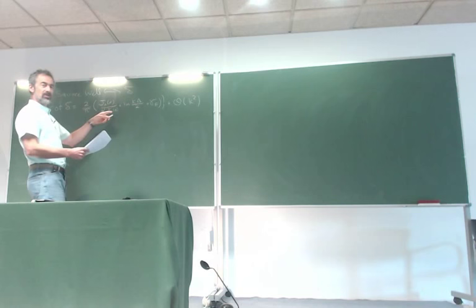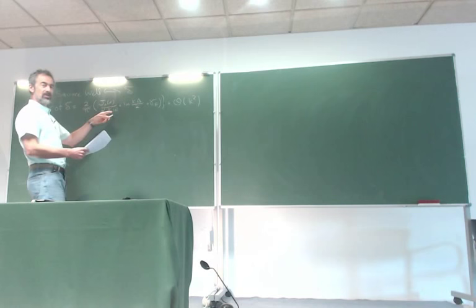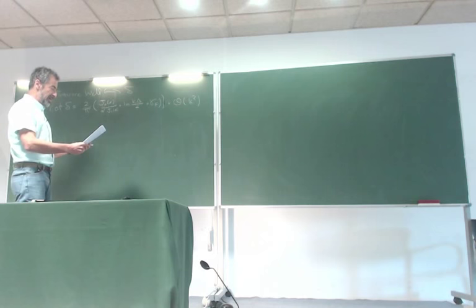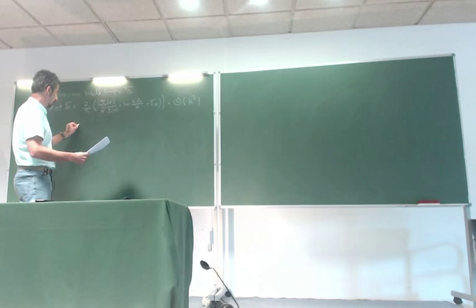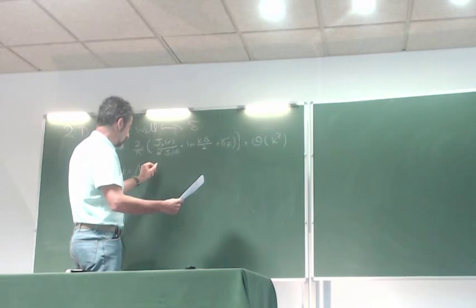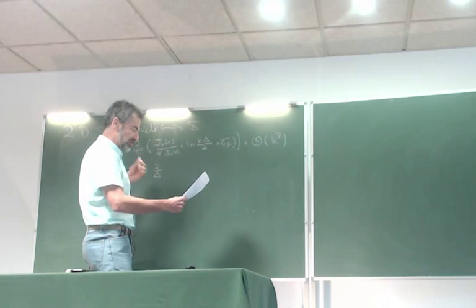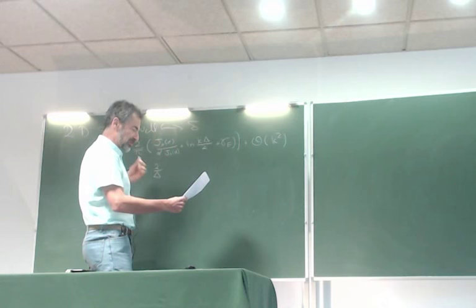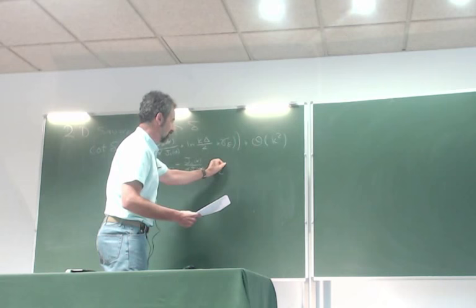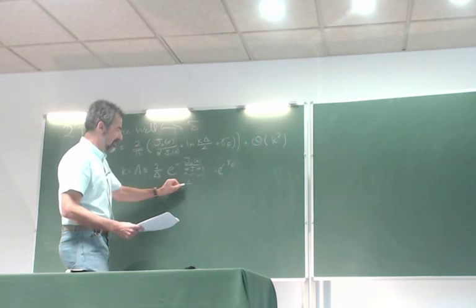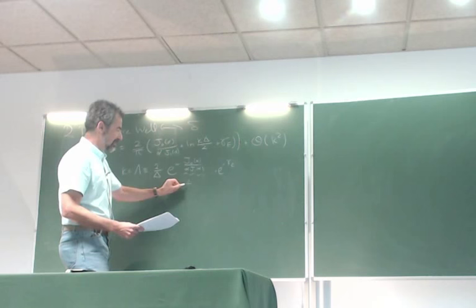We noticed something unusual happening with the log. There was a special place where the cotangent of the phase shift vanished, which corresponds to a bound state. That occurs at a very special value of k which I call λ. This was interesting because λ is a mass scale related exponentially to the fundamental length scale: λ ~ exp(−j₀(α)/α·j₁(α)) times exp(−Euler constant). For small α, the exponent was huge.